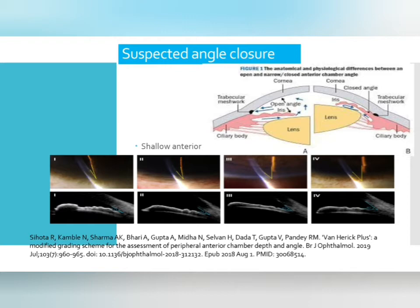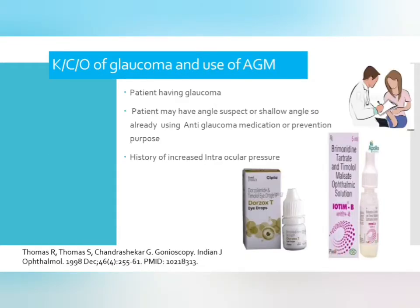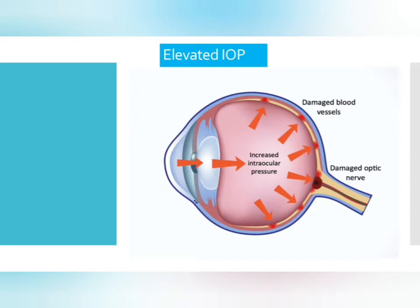If van Herick reading is 4 or 3, you don't need to perform gonioscopy. But if the van Herick reading is 2, 1, or 0, you need to perform gonioscopy. For known cases of glaucoma or use of anti-glaucoma medication: the patient may have glaucoma and is using anti-glaucoma medication, or they may have angle suspect or shallow angle and are using it for prevention, or they had a history of increased IOP and are using it preventively.